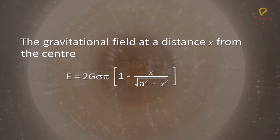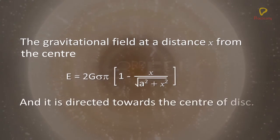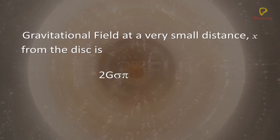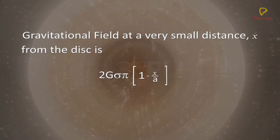And it is directed towards the center of the disc. The gravitational field at a very small distance X from the disc is 2G sigma π (1 minus X by A).